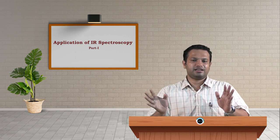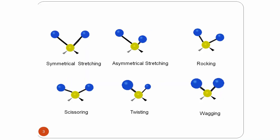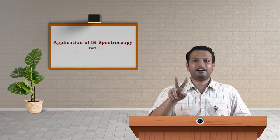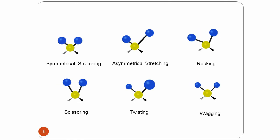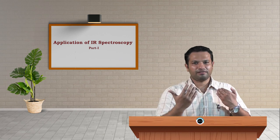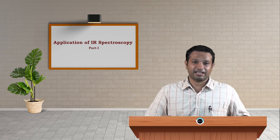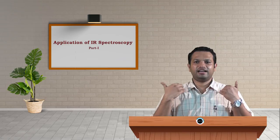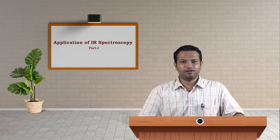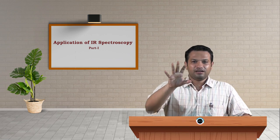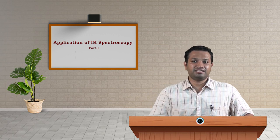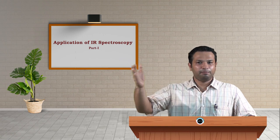Next is rocking — like rocking our hand, both atoms attached to the central atom move together along the axis. Then scissoring — like scissors, the two atoms move towards and away from each other in the plane. Next is twisting — one atom goes away from us while the other comes towards us, alternating. Finally, wagging — movement out of the plane and in the plane. These vibrations give different frequencies, seen as peaks in the spectrum, because each requires a different quantized energy.